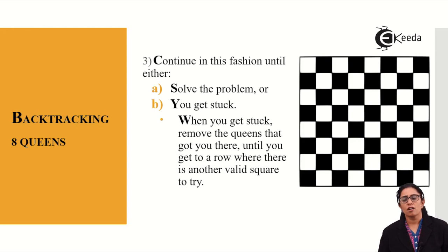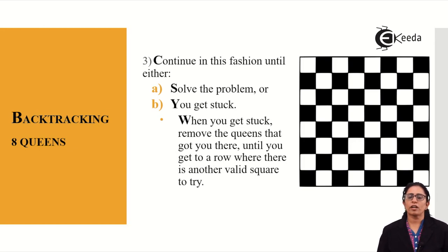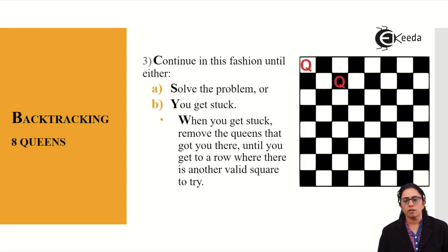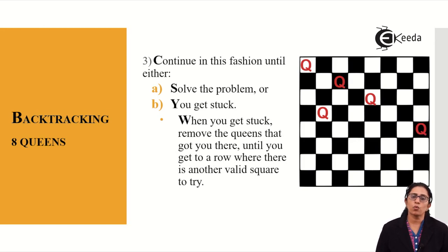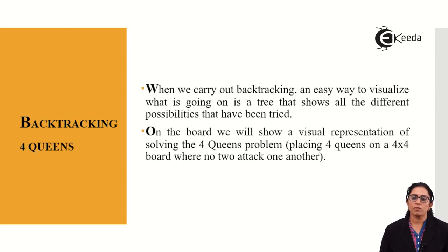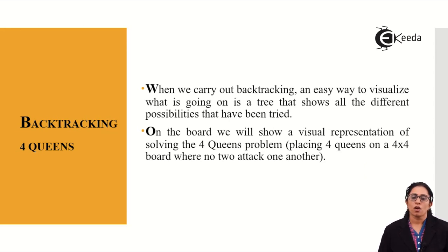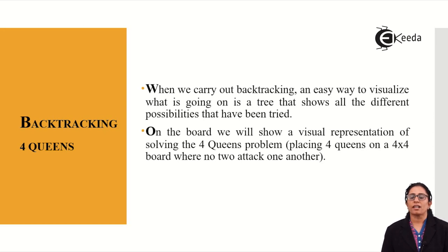When you get stuck, remove the queen and go back to a place where you can find another valid square to try. So I place the first queen, the second queen, the third, the fourth, the fifth — then change its location. This continues in the backtracking manner until I get a perfect solution. An easy way to visualize this is a tree showing all the different possibilities that have been tried.